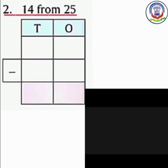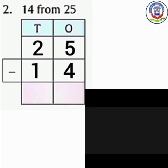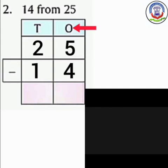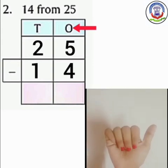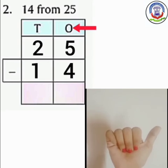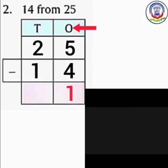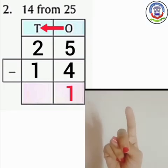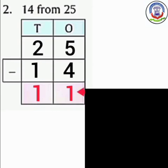Number 2: 14 from 25. तो पहले हम बड़ा नम्बर लिखेंगे — 25 and 14. 25 minus 14. पहले हम ones column से subtract करेंगे. Numbers are 5 and 4. Open 5 fingers and close 4 fingers. How many fingers are left? 1. So we will write here 1. अब हम 10s column में subtract करेंगे. Numbers are 2 and 1. Open 2 fingers and close 1 finger. How many fingers are left? 1. So we will write here 1. The difference is 11.